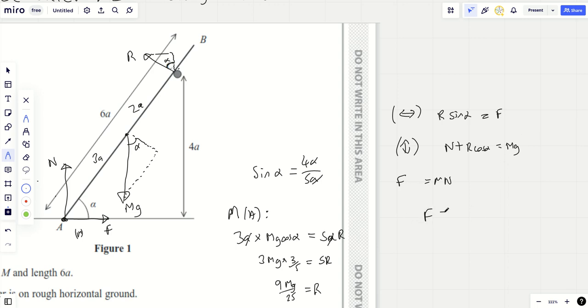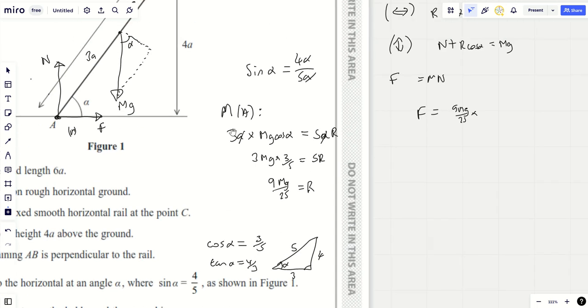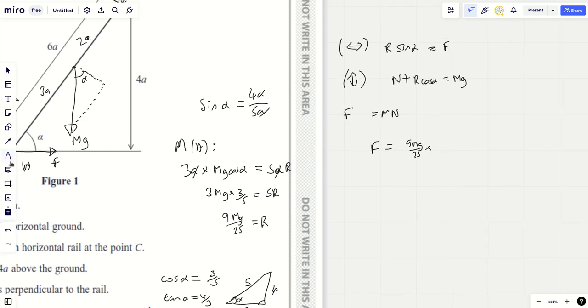So f is going to be equal to 9mg over 25 times by sine alpha, which was four-fifths. So 4 over 5 is going to be 36mg over 125. That's f.